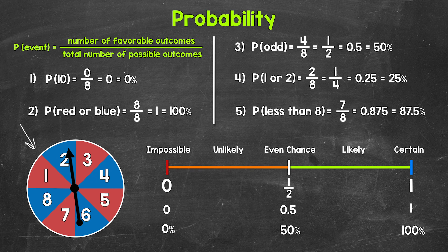Let's jump into number one where we have the probability of spinning a 10. For each example here, I've already calculated the probability. There aren't any 10s on the spinner, so we have zero favorable outcomes. There are eight total sections that the spinner can land on, so eight is our total number of possible outcomes. Our decimal is zero and our percent is zero percent. So we have our probability as a fraction, decimal, and percent.